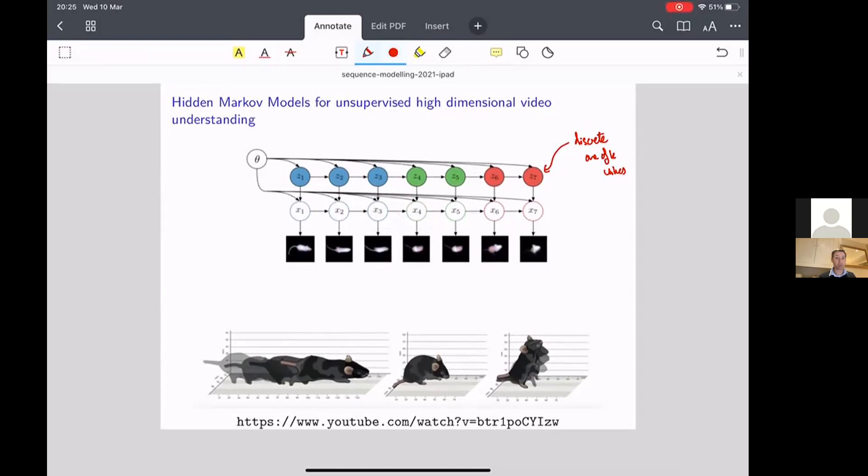the behavior types. So the setting of latent variables here, these are latent variables that we're not going to observe directly. The latent variables are going to be in state one and state one is going to encode for walking around the environment when the animal's walking around the environment.